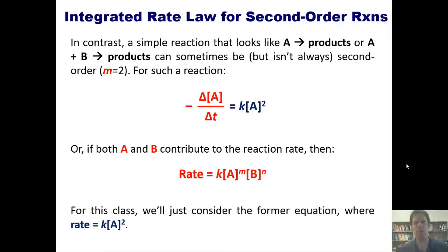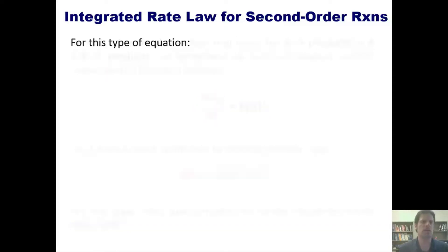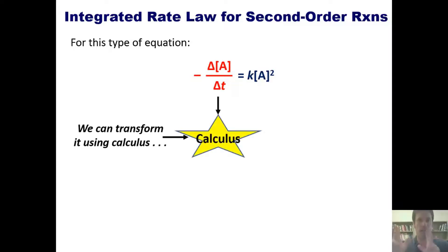For this class, however, we'll just consider the first equation up here, where I've got k times the concentration of A squared as the right hand component. So for this type of equation, right here, we can transform it using calculus, calculus, into this equation.